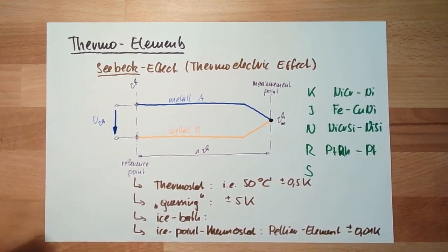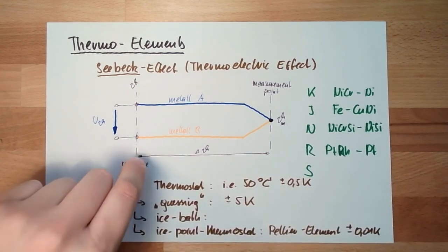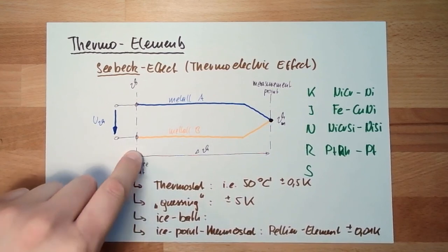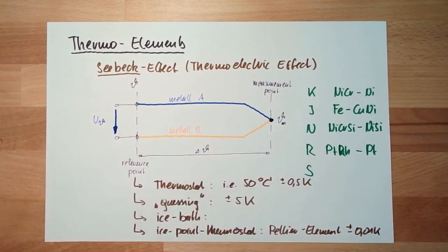All these things are just there to know the temperature of the reference point. And then, from this, I can measure the delta temperature to the measurement point. Thermoelectric element - that's one thing.